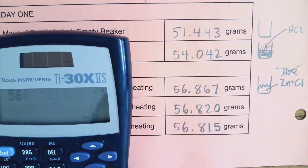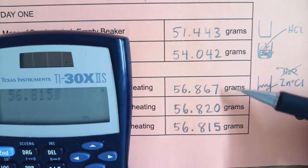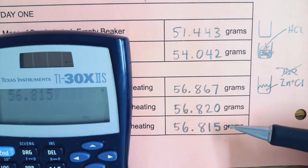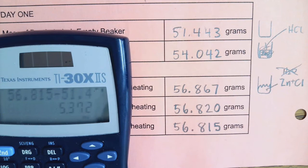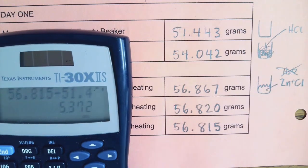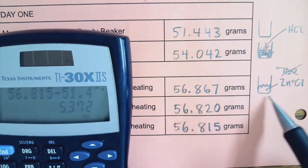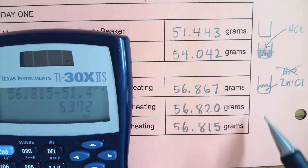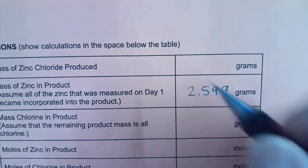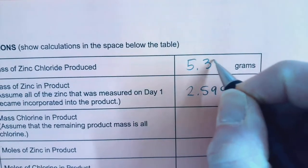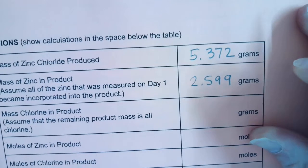So 56.815 was my final lowest measurement. I assumed I was driving off water between each of these steps. I subtract out my empty beaker mass and I get 5.372 grams. Again, I subtracted out the beaker, so what I measured here is my product.